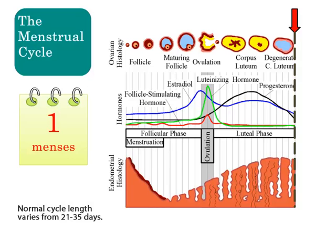A range of 21 to 35 days is considered normal for cycle length. That's why it's important to know the components of fertility, which correspond to the phases of the cycle.